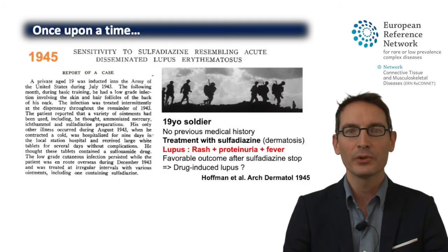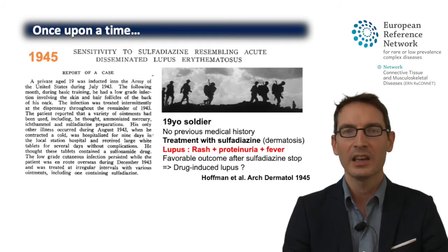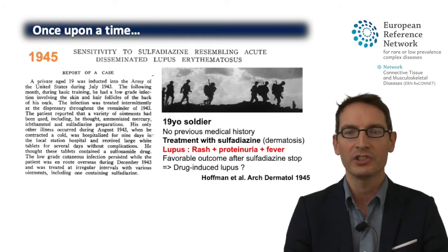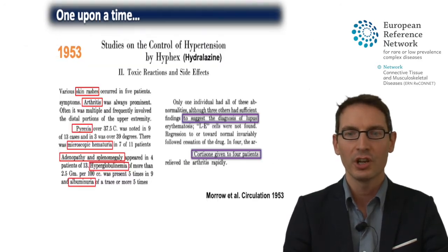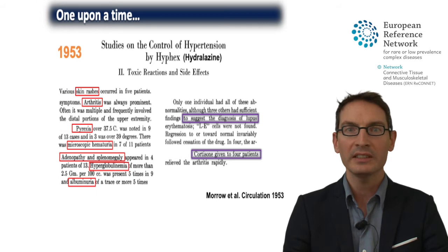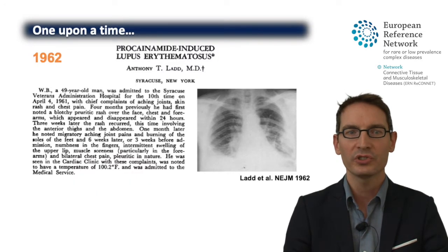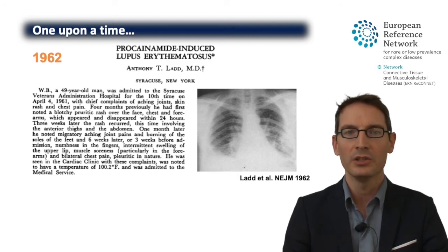Everything started in 1945 with a 19-year-old soldier who was treated for a minor skin infection using sulfadiazine. A few months later, he experienced signs of systemic lupus, including a rash, proteinuria, and fever. In 1953, other cases were reported using hydralazine — five cases showing signs of systemic lupus — and in 1962, typical procainamide-induced lupus erythematosus cases.